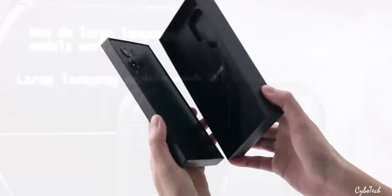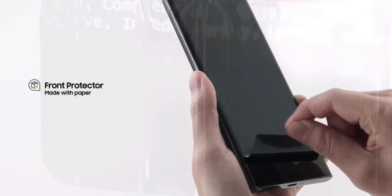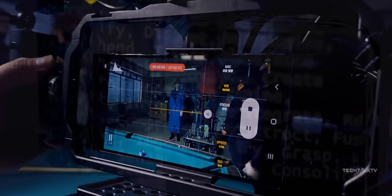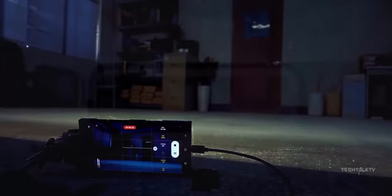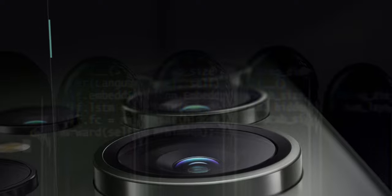The S24 Ultra will be available in four colors: titanium black, titanium violet, titanium gray, and titanium yellow. Additional exclusive colors can be expected from Samsung's online retail store.